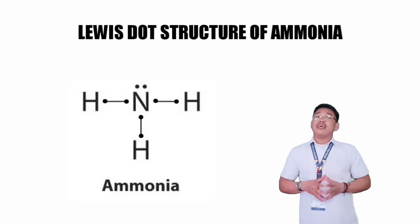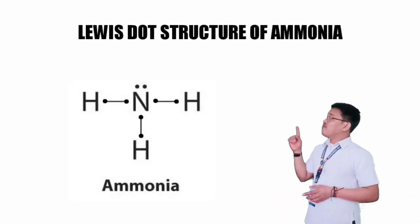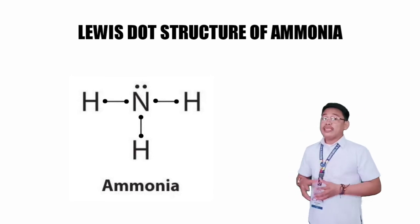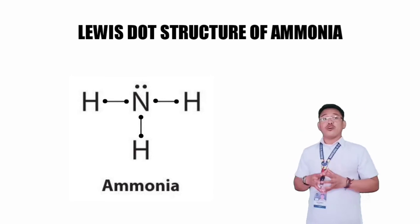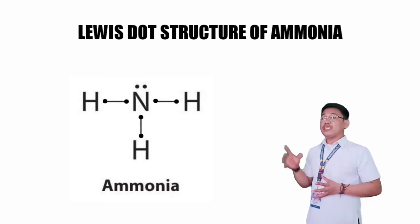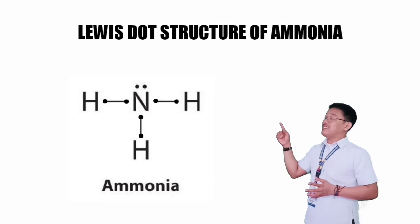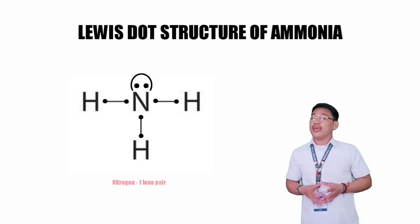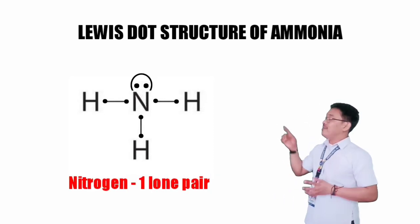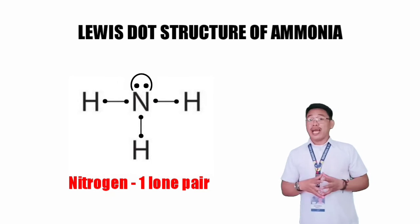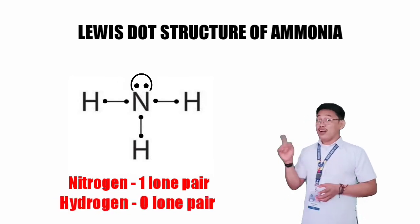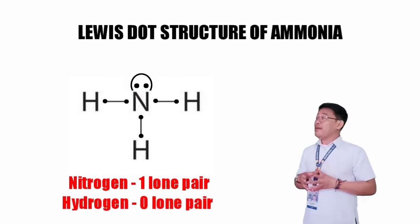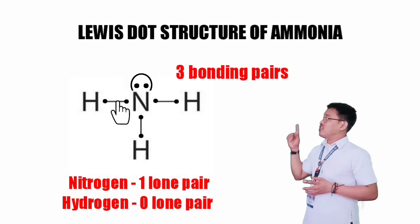Another example is ammonia. Nitrogen has five valence electrons. In the Lewis structure of the ammonia molecule, nitrogen as the central atom has one lone pair. The bonding hydrogen atoms have none. There are three bonding pairs as shown.